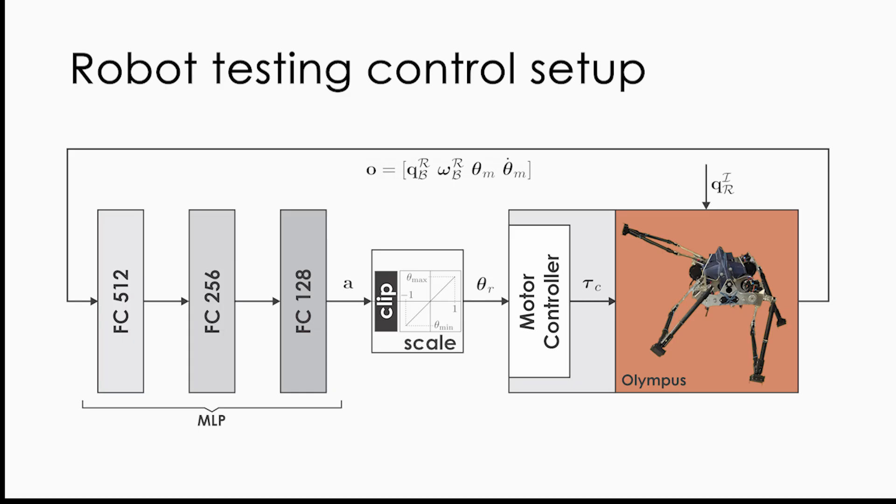Olympus's orientation capabilities were evaluated in two scenarios: mounted on a rigid rod and suspended from a rope. The neural network's output position is translated to torque signals via a low-level motor controller.